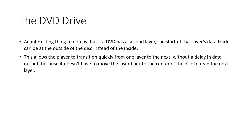If a DVD has a second layer, the start of that layer's data track can be at the outside of the disc instead of the inside. This allows the player to transition quickly from one layer to the next without a delay, because it doesn't have to move the laser back to the center to read the next layer. It works like a zigzag — one layer goes from inside to outside, the next starts from outside and goes inside, and so on.